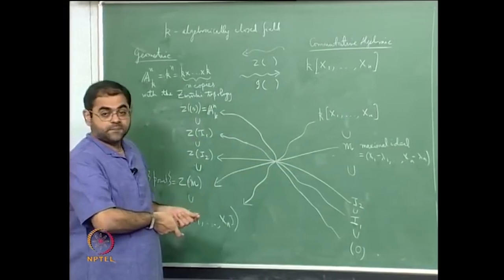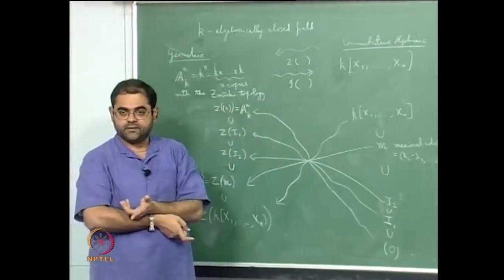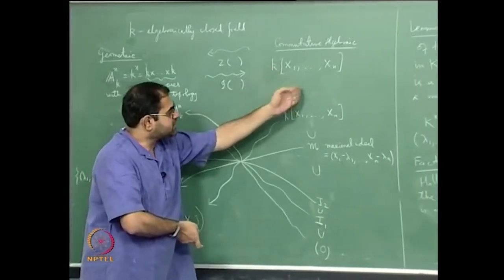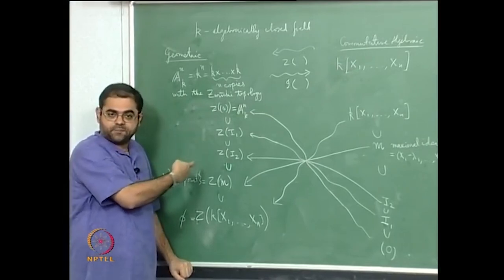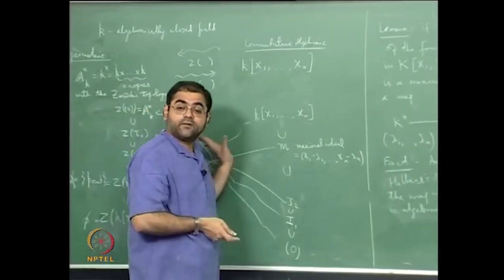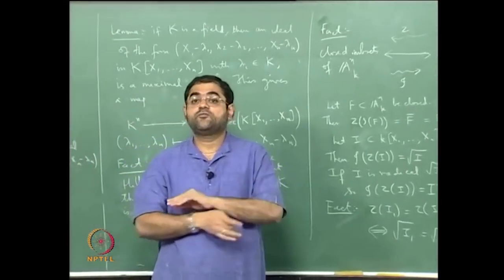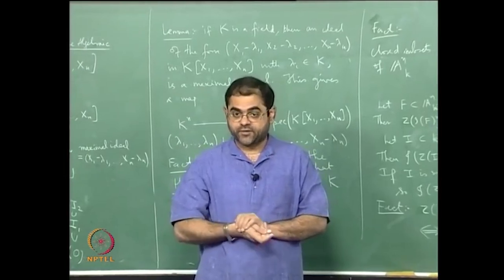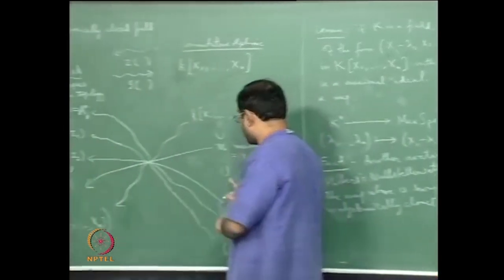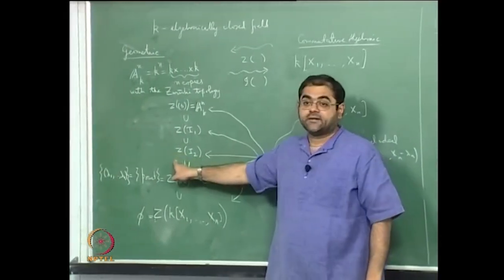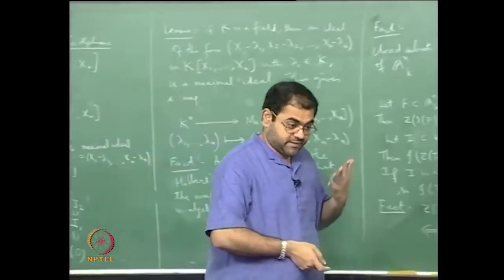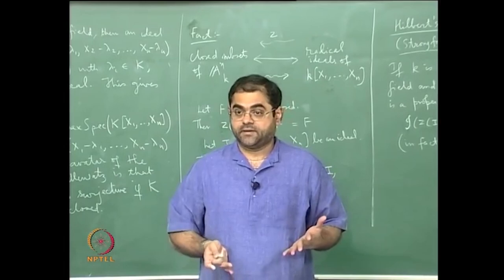For example, maximality and primeness of an ideal are algebraic properties. When you take the zero set of a prime ideal, the answer is that you get a strong form of connectedness of the corresponding zero set. This strong form is called irreducibility. Prime ideals correspond to closed sets on the other side that are topologically what are called irreducible sets.